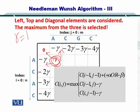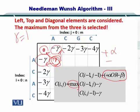How do you compute it? All you have to do is take the maximum from these three positions and incorporate plus alpha or minus beta. So if A matches with an A, then it will be 0 plus alpha.